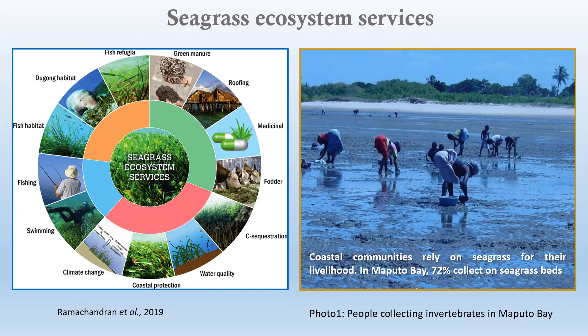Among other ecosystem services, many seagrass species produce an extensive underground network of roots and rhizomes, which stabilize sediment and reduce coastal erosion. Their leaves can also slow the movement of water, which reduces wave energy and offers further protection against coastal erosion and storm surge. Seagrass also enhances water quality by stabilizing heavy metals, pollutants, and excess nutrients. Globally, it holds twice as much carbon dioxide as rainforests, and accounts for more than 10% of oceans' total carbon storage annually, making it a tool in the fight against climate change.